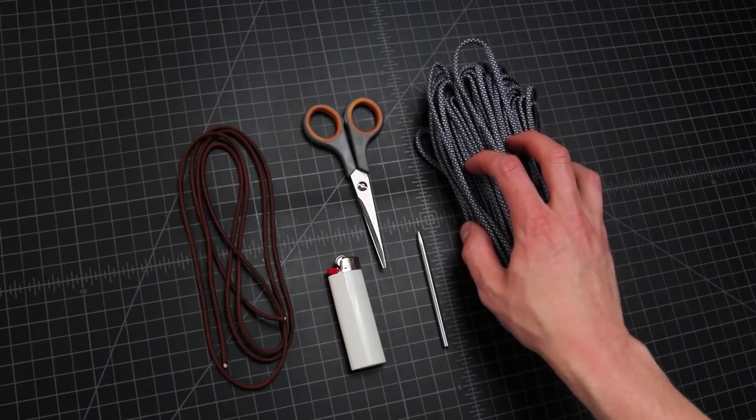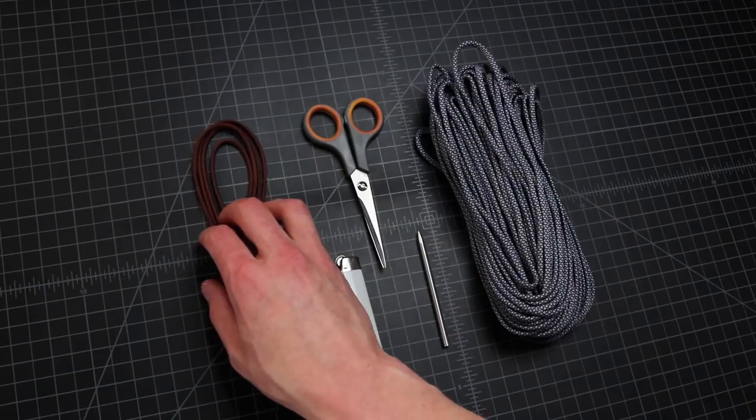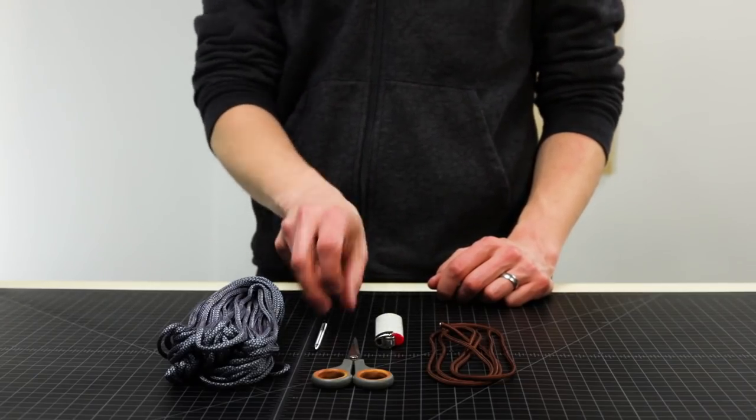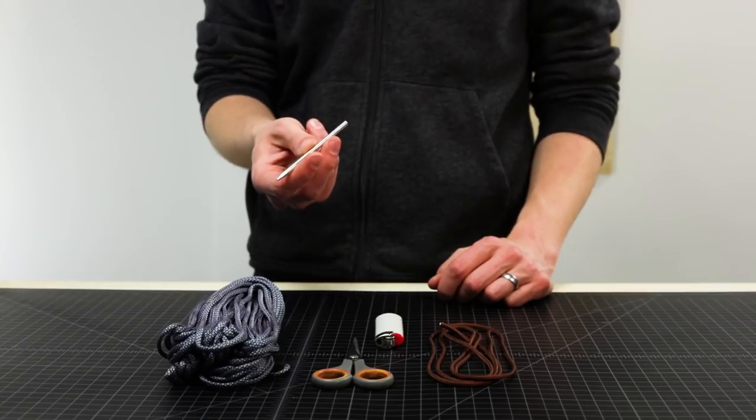I've got a hundred feet of paracord here in front of me and also another five for an adjustable portion. The tools you'll need: scissors and a lighter of course, and then a type 3 fit is going to come in handy.